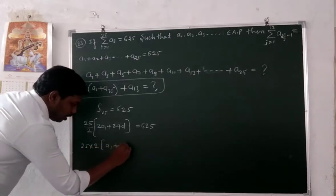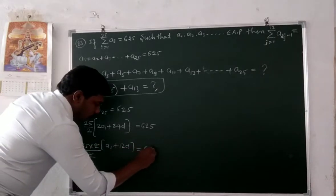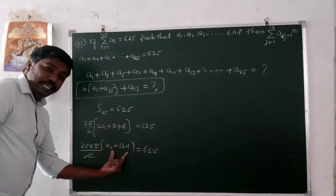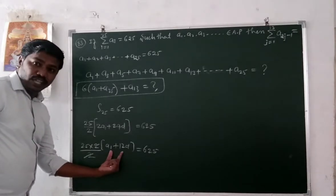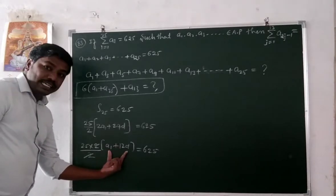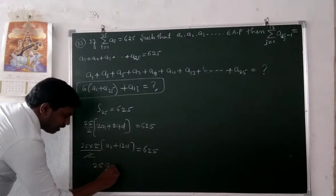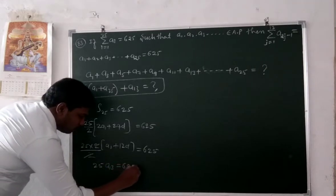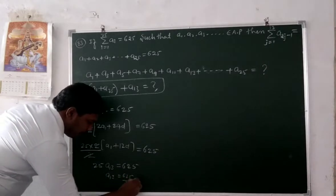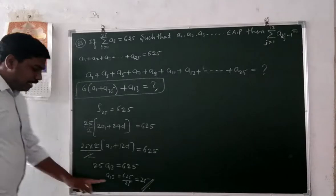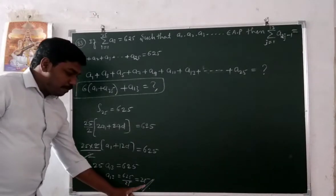So a1 plus 12D equals A13, which is the 13th element of the AP. Therefore 25 times A13 equals 625, giving A13 equals 625 divided by 25, which equals 25. So A13 is equal to 25.